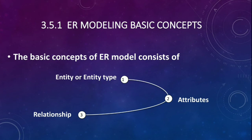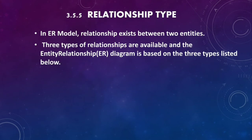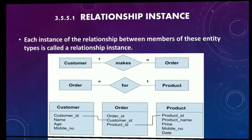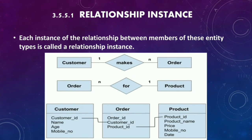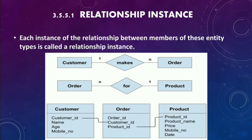Coming back to the main topic: in ER modeling basic concepts we have three concepts. We have completed entity and attributes; the final topic is relationship and its types. In an ER model, a relationship exists between two entities. Look at the picture: we have two entities, Customer and Order. The rhombus shape between them represents the relationship, and the value inside is the relationship instance.